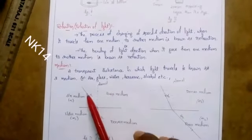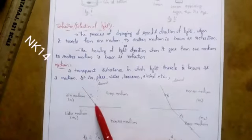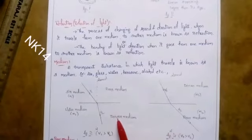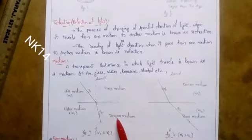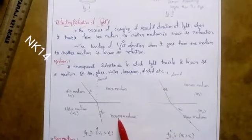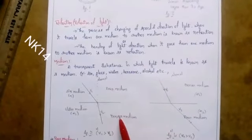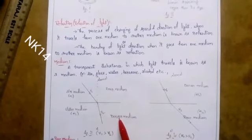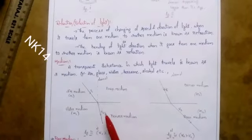In a rarer medium, as the particles are far away from each other, the speed of the light will be faster. In a denser medium, the particles are closely packed, so the speed of the light decreases.